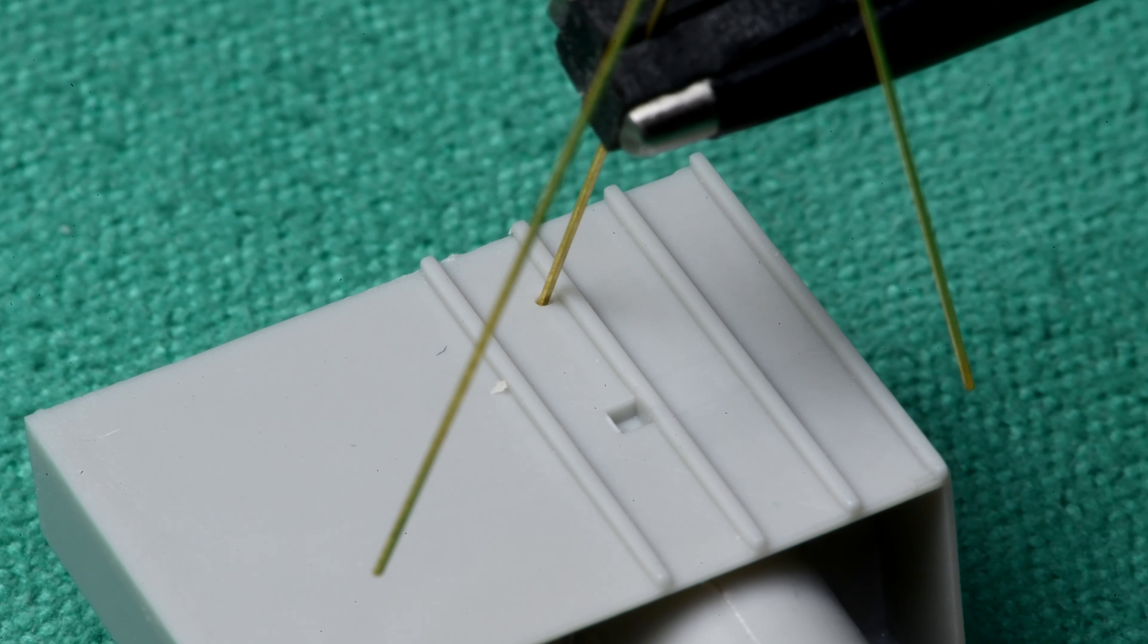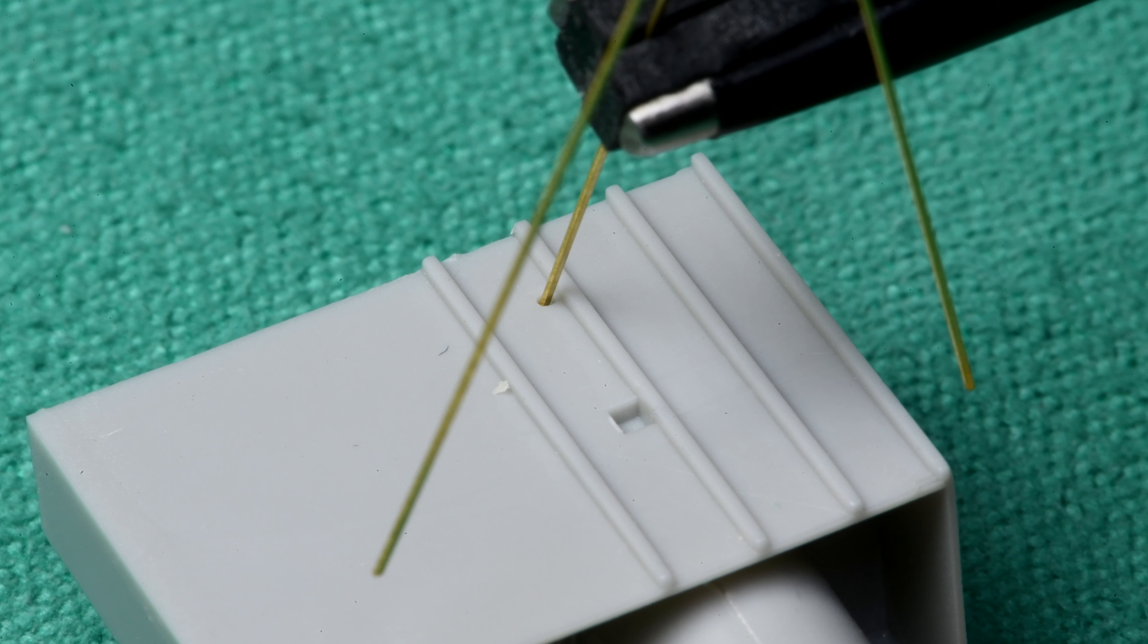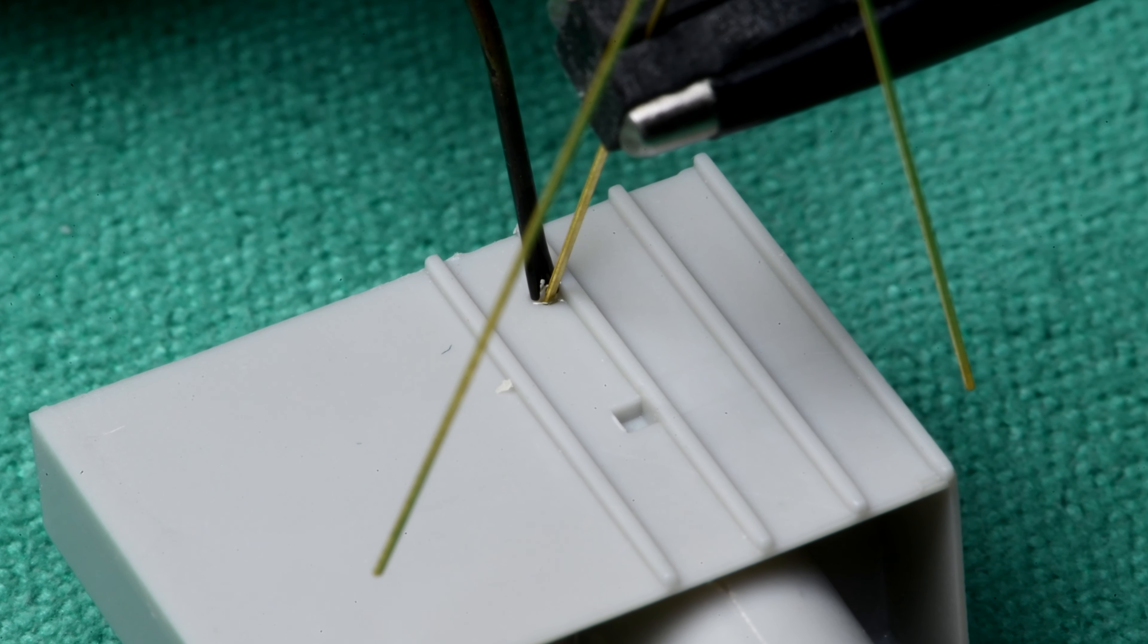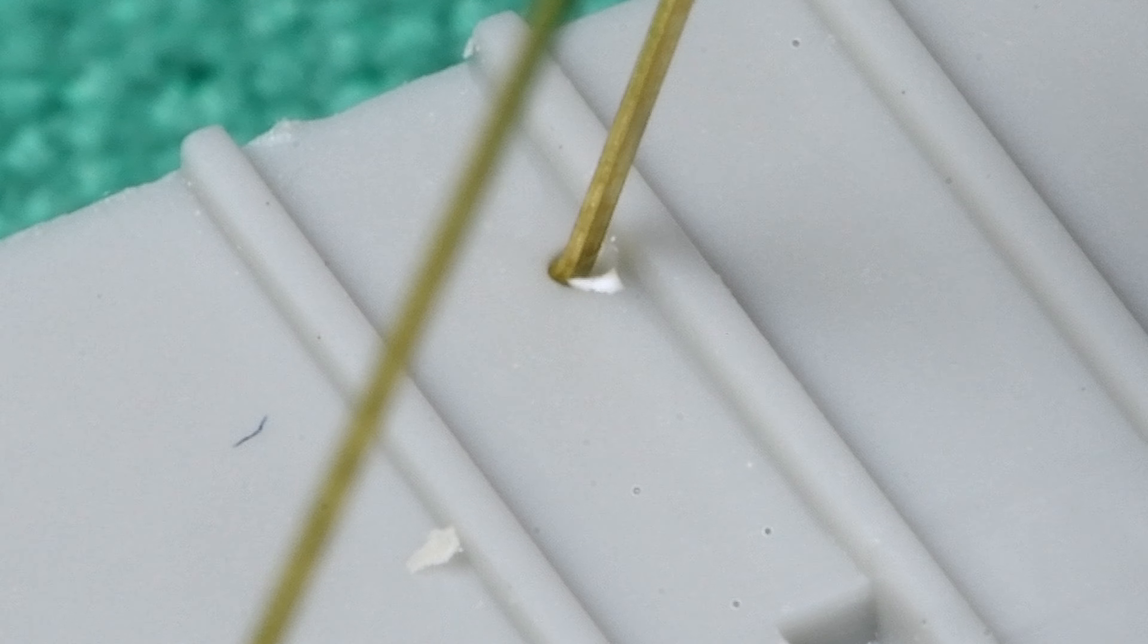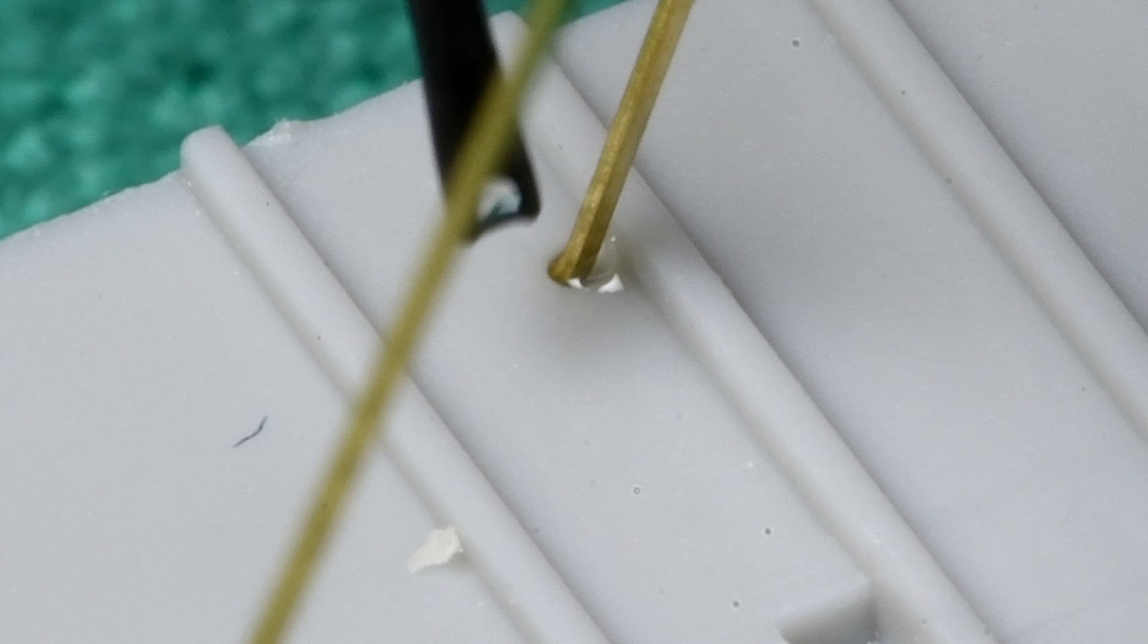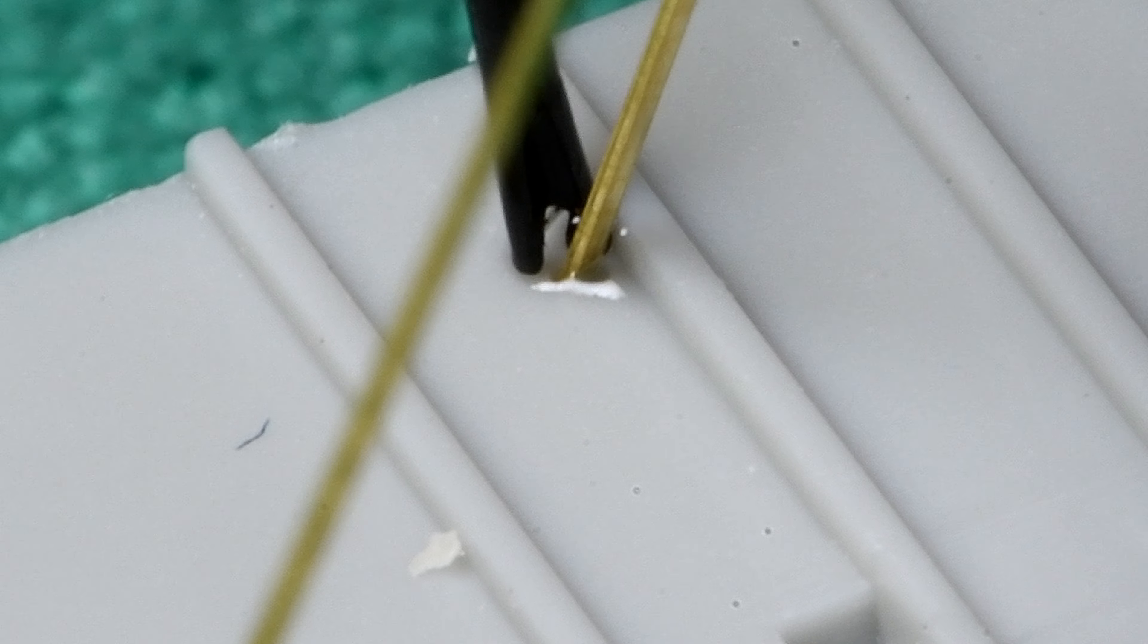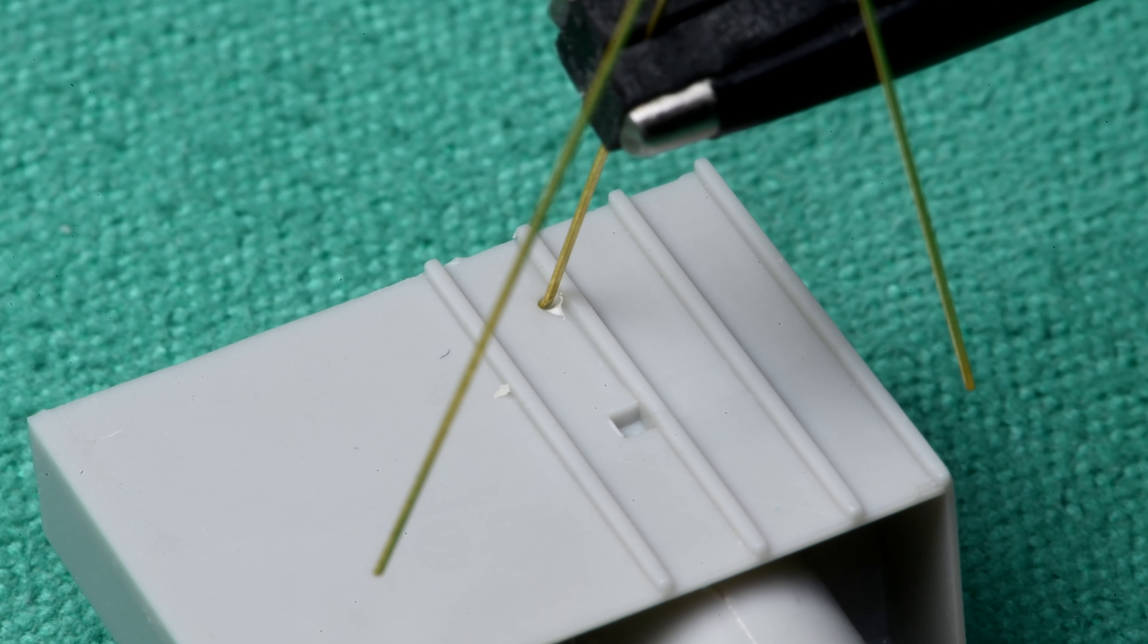Now I'm going to take some CA thin here. I can't tell if I got it or not. I think I did. I think some came off. Try a little bit more here. This is when I always try a little bit more, and that's generally when Murphy pops out of his box. I think I got it. Let's just leave that for a little while and see what happens.